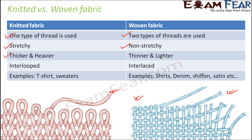Knitted fabric is thicker and heavier, whereas woven fabric is thinner and lighter — that is another difference. Knitted fabric is inter-looped because you just have one thread forming loops within itself, whereas woven fabric is interlaced — two different threads interlaced with each other. Some examples of knitted fabrics are t-shirts and sweaters, whereas woven fabric would be denim, chiffon, and satin. Just look at a satin cloth or a denim cloth — you will see it is not stretchy. But when you look at a sweater, sweatshirt, or t-shirt, you can stretch it easily.